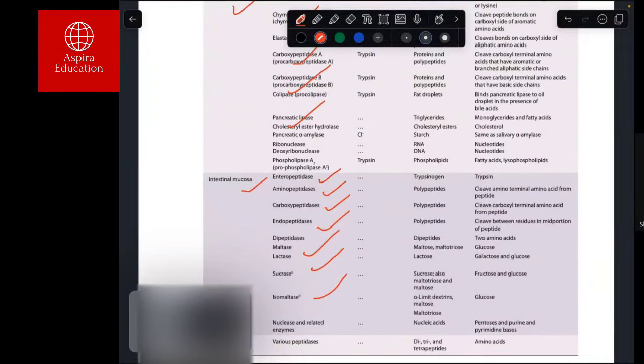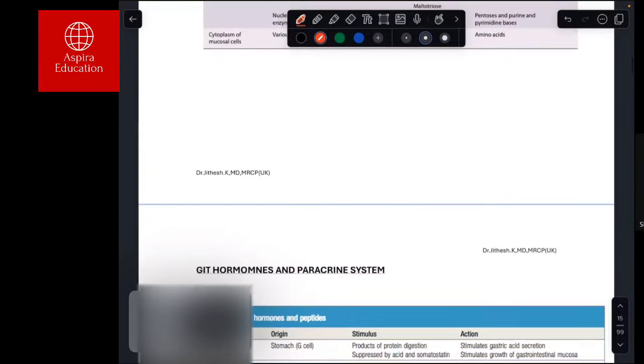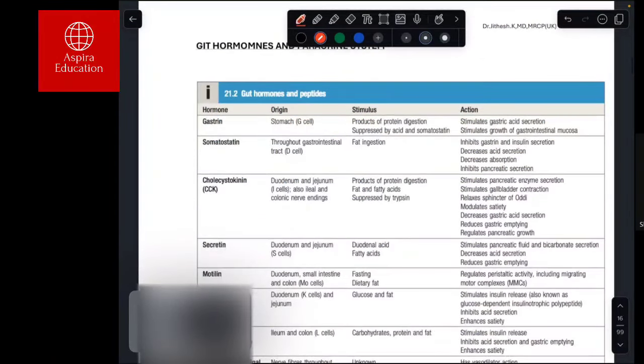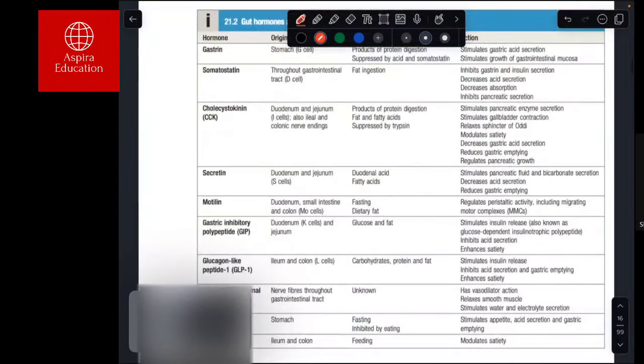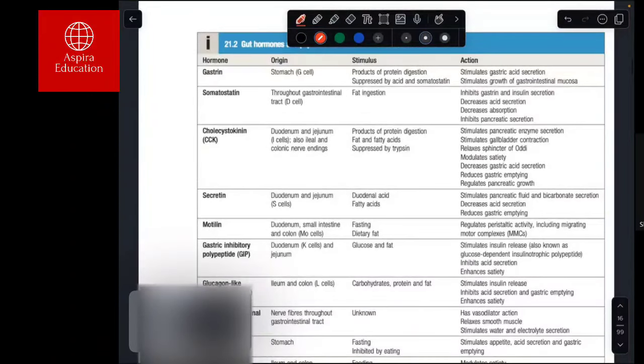Gut hormones are also a very important part of your MRCP exam. You have to know the major gut hormones. Gastrin is produced by the stomach G cells, involved in protein digestion, and suppresses acid secretion. Somatostatin is produced by the gastrointestinal tract D cells and is involved in fat digestion.